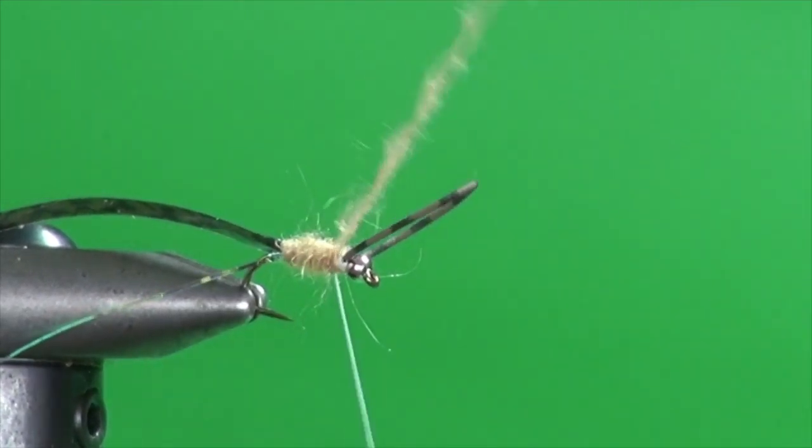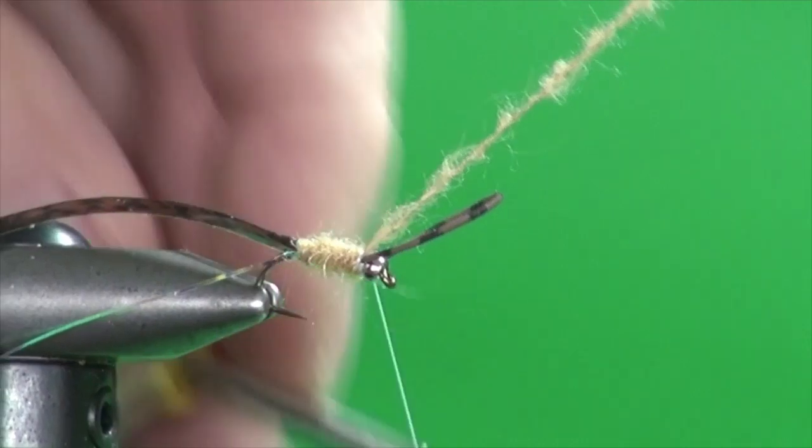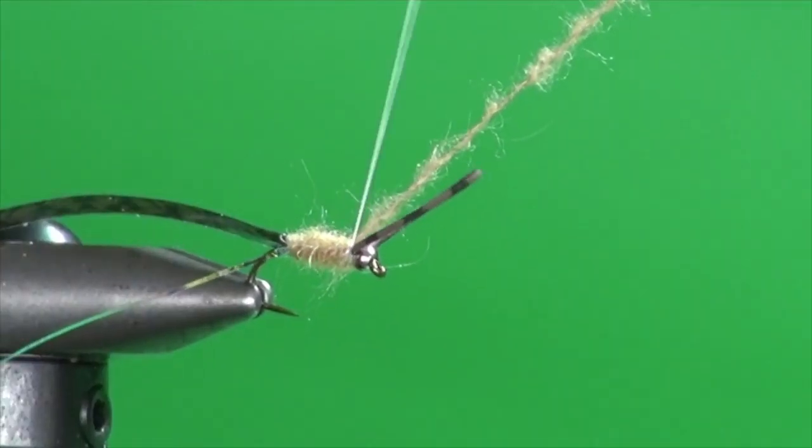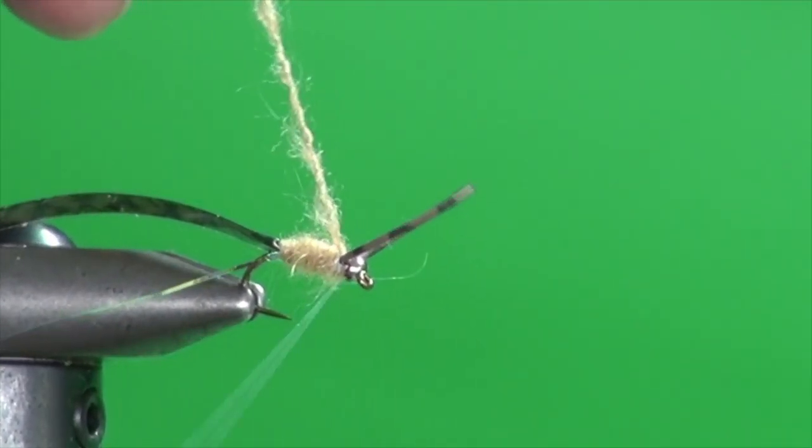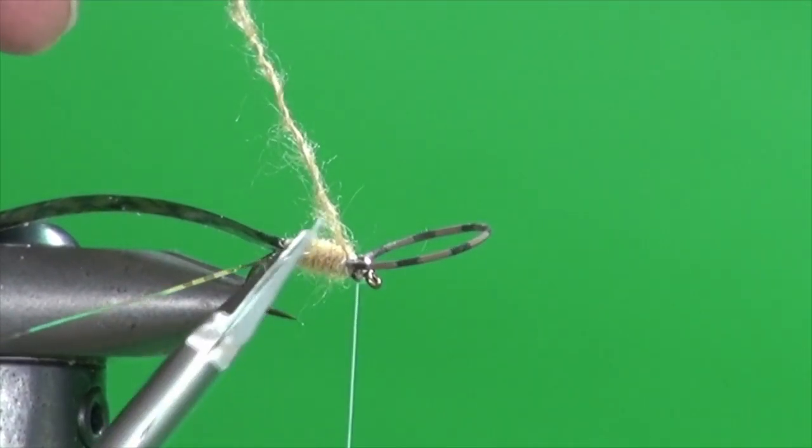So we're just going to move this up. And by doing this, my thread's always in the tie-off point. I'm just going to tie that off just behind the bead. Don't worry about those legs. Again, we're going to deal with those in a second.